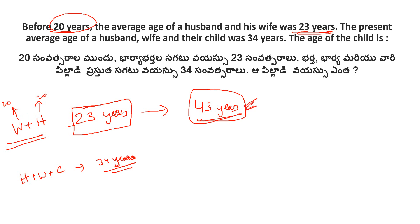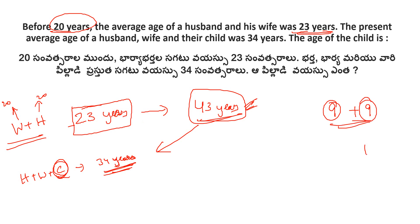The actual present combined age of husband and wife is 43 plus 43 equals 43 years. But the present average age including the child is 34 years, which corresponds to a total of 102. The difference is used to find the child's age.